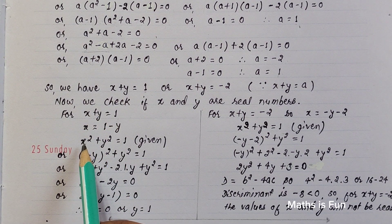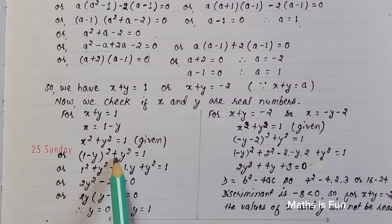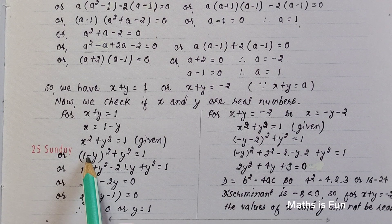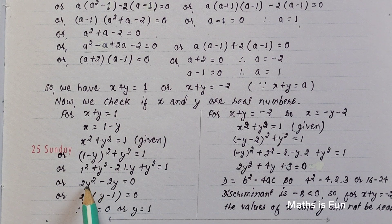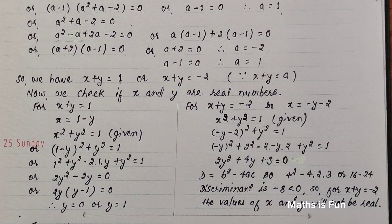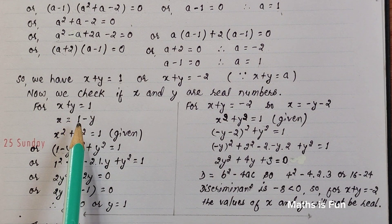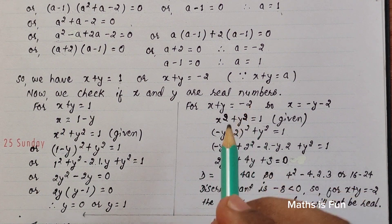Substituting x = 1 - y into x² + y² = 1 gives (1 - y)² + y² = 1. Expanding: 1 - 2y + y² + y² = 1, which simplifies to 2y² - 2y = 0. Taking 2y as a common factor gives 2y(y - 1) = 0, so y = 0 or y = 1. Both are real, so x + y = 1 is valid.